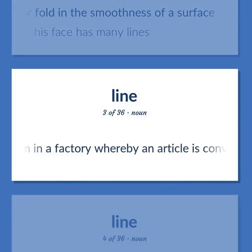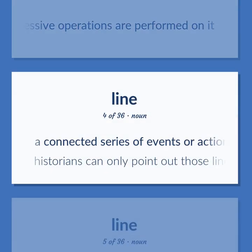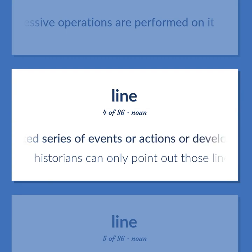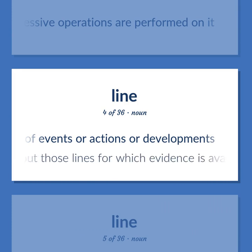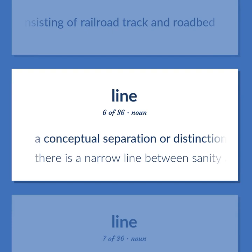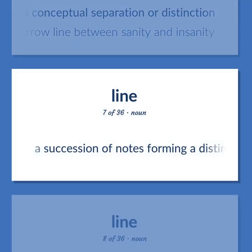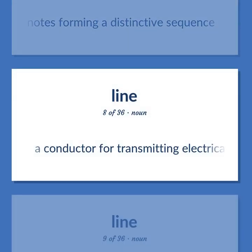Mechanical system in a factory whereby an article is conveyed through sites at which successive operations are performed on it. A connected series of events or actions or developments. Historians can only point out those lines for which evidence is available. The road consisting of railroad track and roadbed. A conceptual separation or distinction. There is a narrow line between sanity and insanity. A succession of notes forming a distinctive sequence.